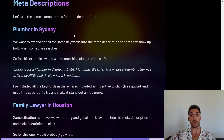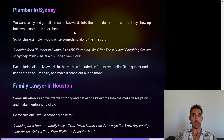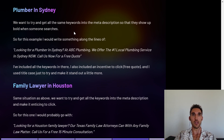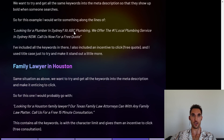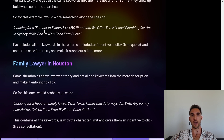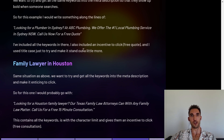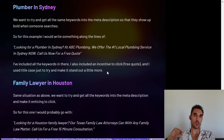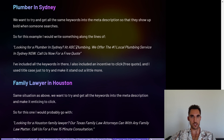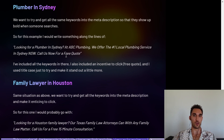Now let's go to the meta descriptions for each of these examples. For plumber in Sydney, we would want to try and include all the same keywords we had in the meta title in the description as well, so they show up in bold when someone searches. I would write something along the lines of: 'Looking for a Plumber in Sydney? At ABC Plumbing, We Offer the Number One Local Plumbing Service in Sydney, New South Wales. Call Us for a Free Quote.' I've included all the different keyword variations, an incentive to click — the free quote — and I use title case to make it stand out more in the search result.